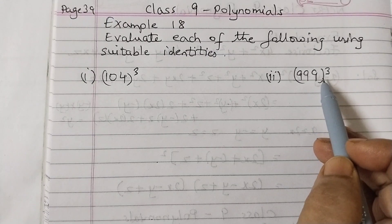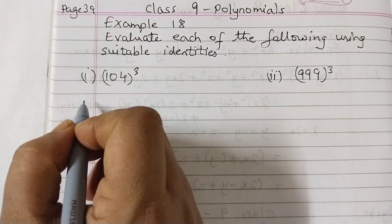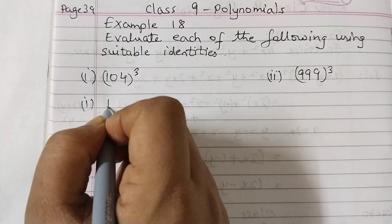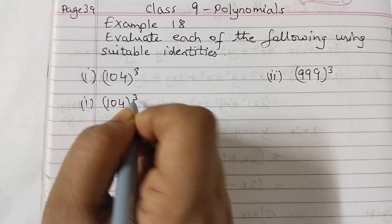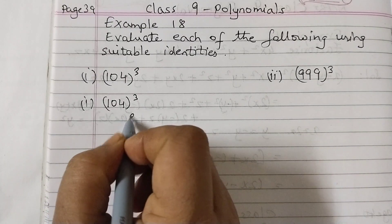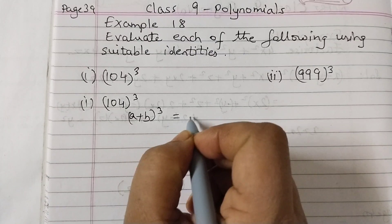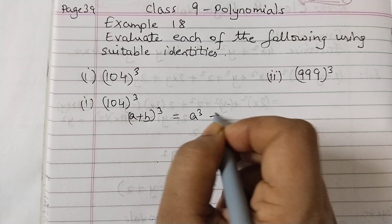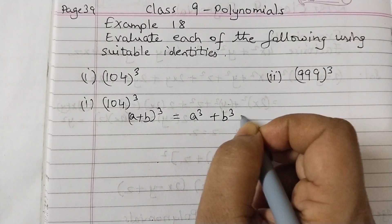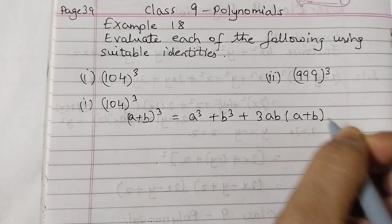So the first one, 104 cubed. Now the identity that we are going to use is a plus b the whole cube is equal to a cubed plus b cubed plus 3ab times a plus b.